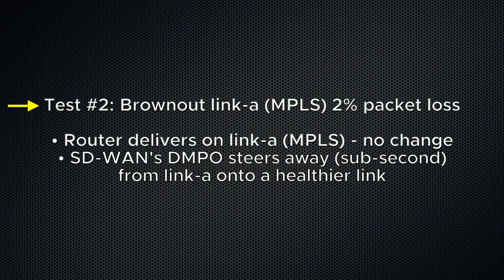We are now going to simulate exactly that by inducing 2% packet loss on the MPLS link A to break the SLA on both environments and see how that impacts user performance at each site. On the traditional router network, we expect no change in delivery — link A is still used regardless of the high loss encountered. In the case of VMware SD-WAN, it will react to this network impairment and, to maintain the SLA for the application under test, it will dynamically start steering traffic on the better condition WAN link B.